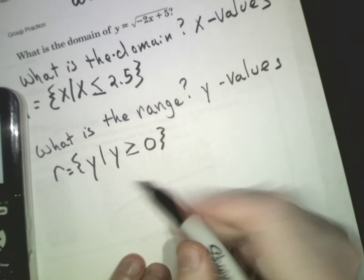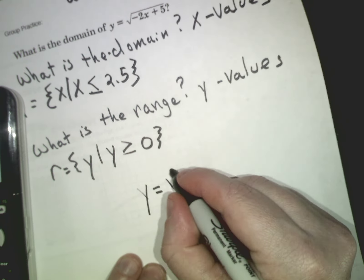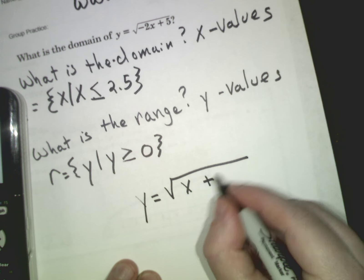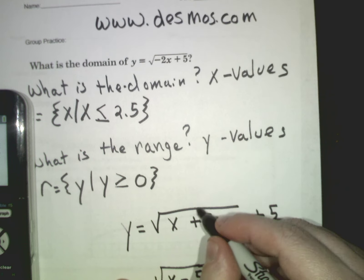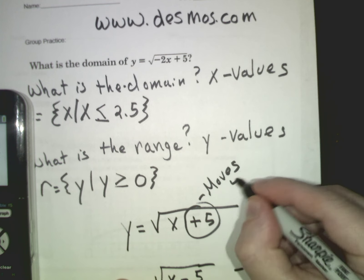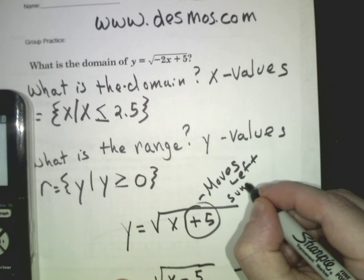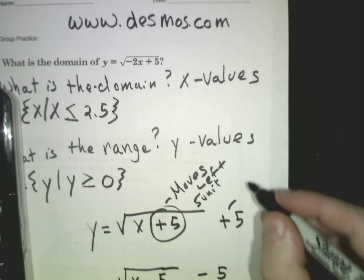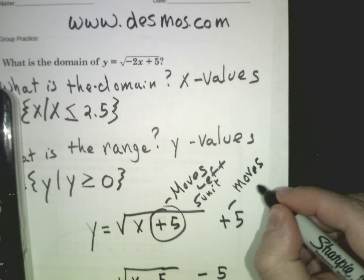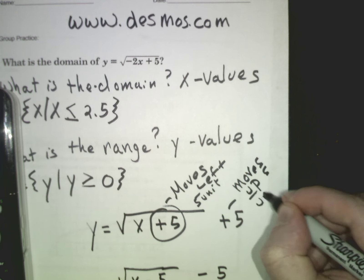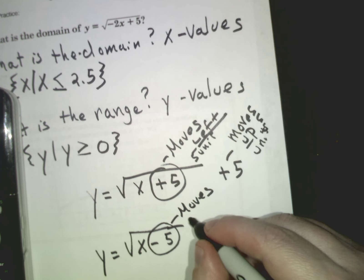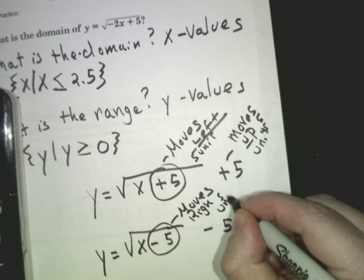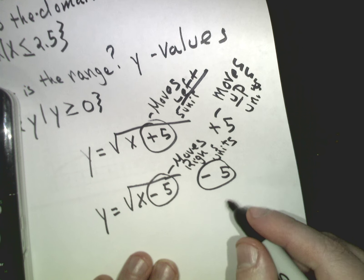If I write something like y equals square root of x plus five, plus five on the outside, or y equals square root of x minus five, minus five on the outside, this moves it. You can see this - the one at the bottom moves it down five units.